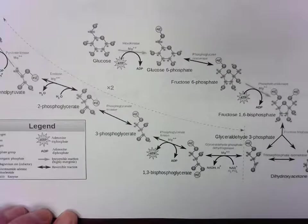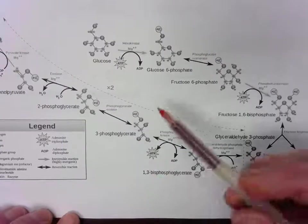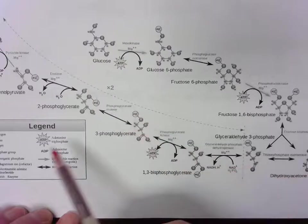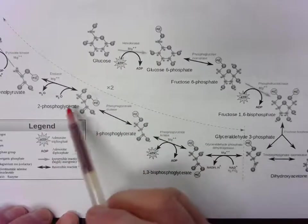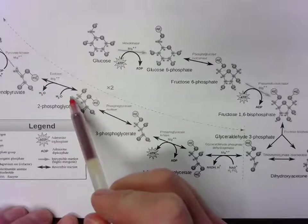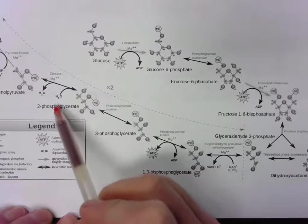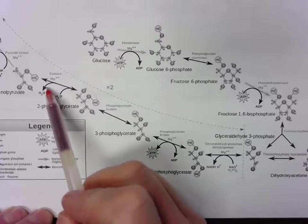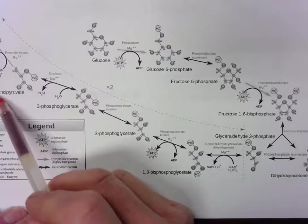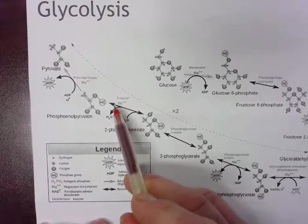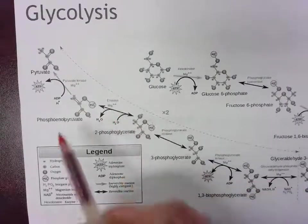And then step eight, 3-phosphoglycerate is basically just isomerized with phosphoglycerate mutase. So nothing happens there in terms of energy. And the next step, 2-phosphoglycerate is, again, nothing really happens here in terms of energy. It just basically, water gets released here to produce phosphoenolpyruvate. Bring that into focus. Enolase, of course, is the enzyme here. And magnesium would be the cofactor.